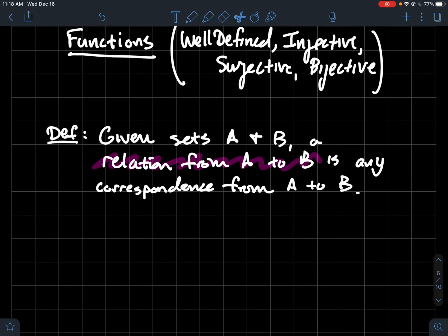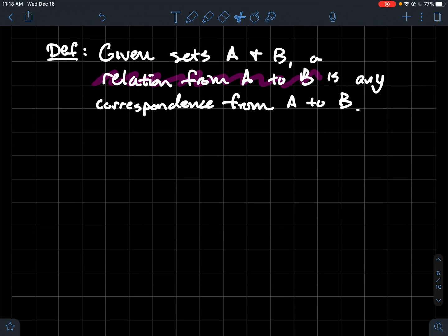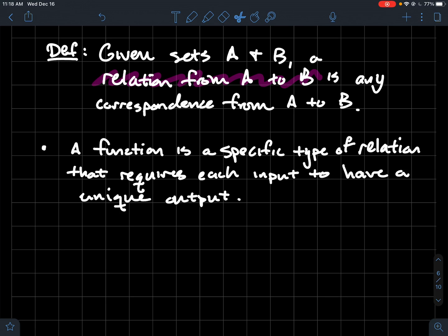What if I take that requirement away? What if I just have a correspondence between two sets? So given two sets A and B, a relation from A to B is just any correspondence from A to B. So one element could be associated to more than one element and that satisfies this definition of a relation here.